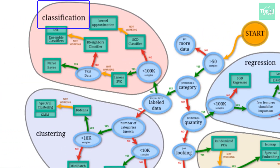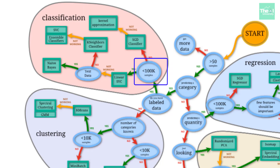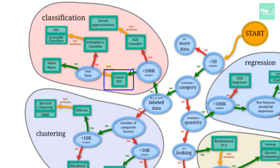Now we check if the number of observations in the dataset are less than 100,000. If yes, we can opt for Linear SVC — the support vector classifier algorithm. If Linear SVC doesn't give the right results or accuracy, we then check if the data is text or not.